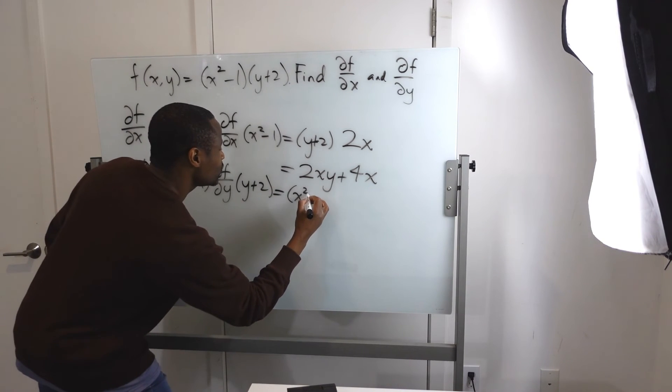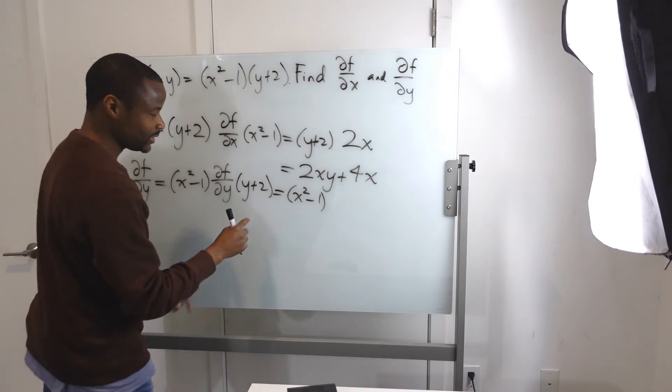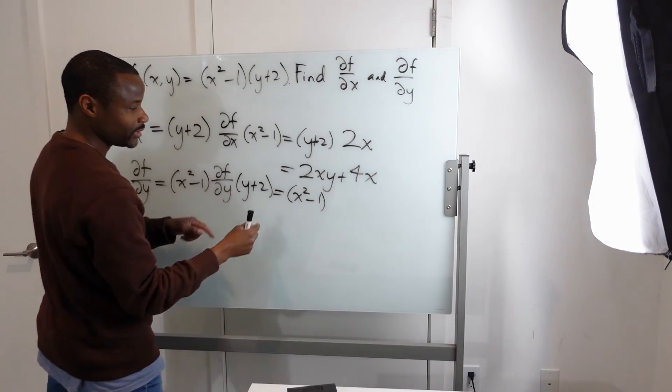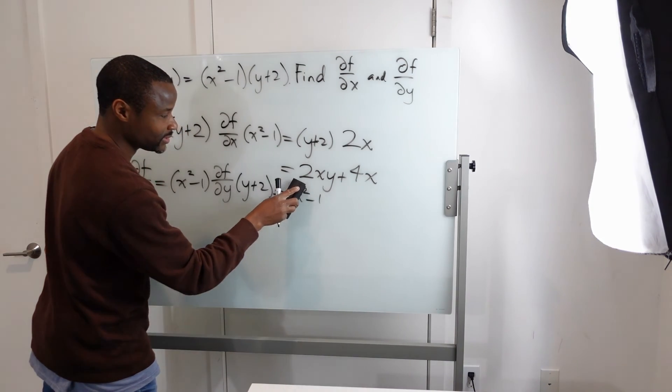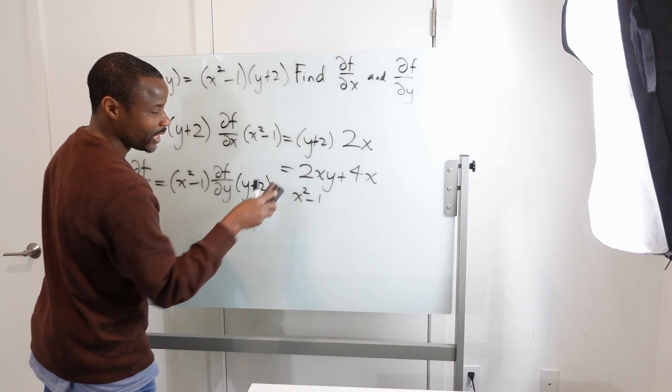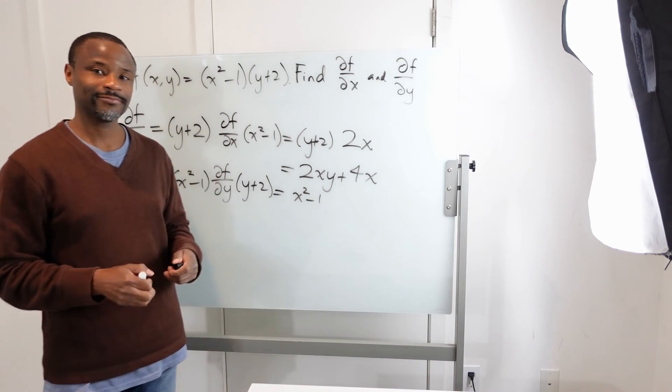Which is x squared minus 1. Derivative of this is just 1. So that's it. We have this times 1, which means we actually don't need the parentheses because we don't have to multiply by anything. We're done. That's our final answer. Thank you.